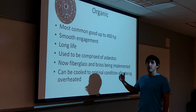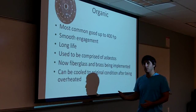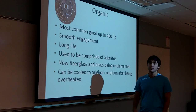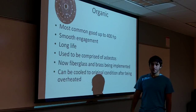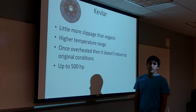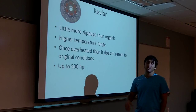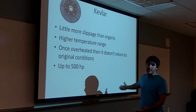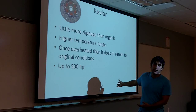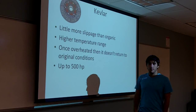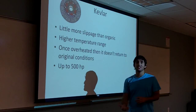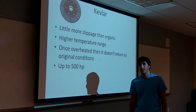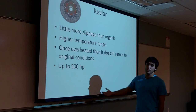The problem with organic material is it is made with iron coated with asbestos, which has many health issues, so manufacturers are now trying to change it to fiberglass and brass. Kevlar has a little more slippage than organic and a slightly higher temperature range, which is relevant for energy loss. However, Kevlar does not restore to original conditions once overheated — once warped it must be replaced. It is rated good up to 500 horsepower.